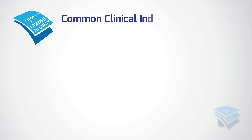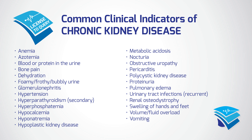Common clinical indicators of CKD include anemia, azotemia, blood or protein in the urine, bone pain, dehydration, foamy or bubbly urine, glomerulonephritis, hypertension, secondary hyperparathyroidism, hyperphosphatemia, hypocalcemia, hyponatremia, hypoplastic kidney disease, metabolic acidosis, nocturia, obstructive uropathy, pericarditis, polycystic kidney disease, proteinuria, pulmonary edema, recurrent urinary tract infections, renal osteodystrophy, swelling of hands and feet, volume or fluid overload, and vomiting.